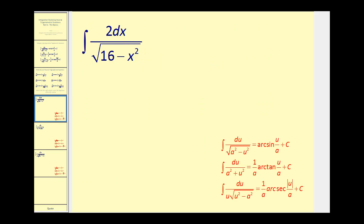Again, the first thing we want to do is be able to recognize which formula we are going to apply. And the key is the denominator. We have the square root of 16 minus x squared. So if we look at these three formulas, that pattern fits the first one.